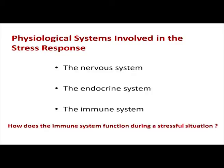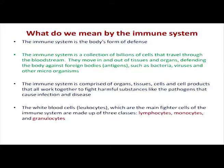The physiological systems involved in the stress response are the nervous system, the endocrine system, and the immune system. We have already studied the nervous system and the endocrine system. Today we are going to see how the immune system functions during a stressful situation. The immune system is the body's form of defense — a collection of billions of cells that travel through the bloodstream, moving in and out of tissues and organs, defending the body against foreign bodies like viruses, bacteria, and other microorganisms.